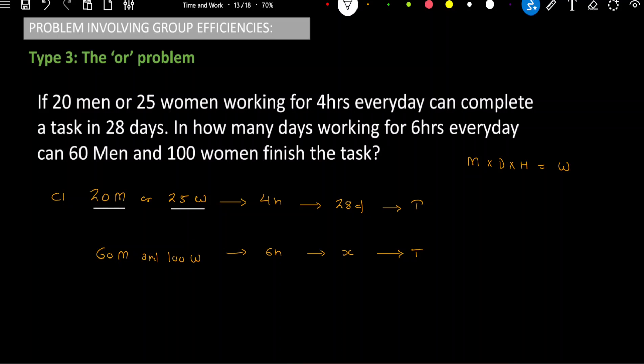the 20 men are equivalent of 25 women. If I want this work to be done by women, there should be 25 women. But what if I want this work to be done by men? Then I need 20 men. It means 20 men can be interchanged with 25 women and vice versa is also true. I can replace 25 men.